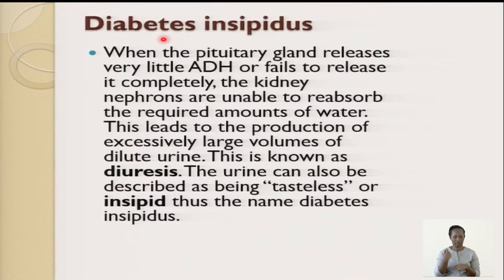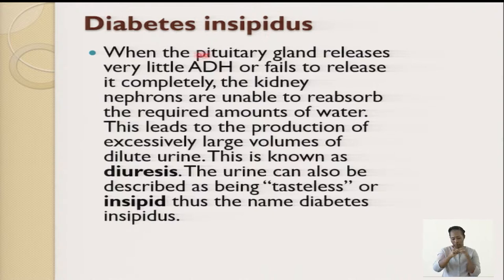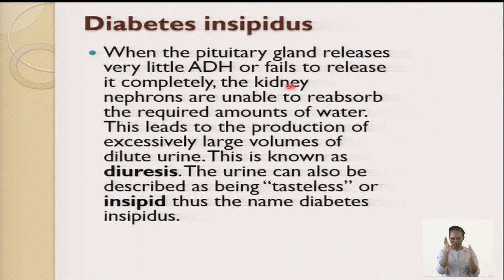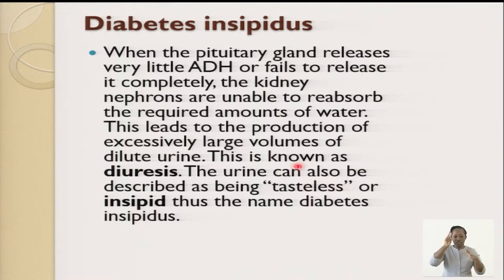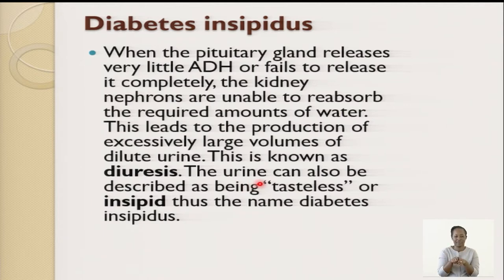When there is less water being discharged into the urine, a person may suffer from diabetes. When the pituitary gland releases very little ADH or fails to release it completely, the nephrons are unable to absorb the required amount of water. This leads to excessive large volumes of dilute urine — a condition known as diuresis, or diabetes insipidus.